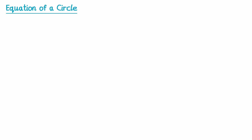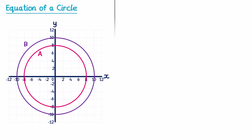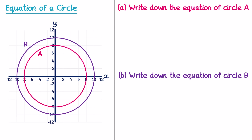Sometimes questions will test the reverse process — they could give you a circle that's already been drawn and ask you about its equation. In this example, we need to write down the equation of circle A and circle B. Looking at circle A, I can see it crosses all of the axes at 8 and negative 8, which means its radius must be 8. So the equation is x² + y² = 8², and 8² is 64, so it's x² + y² = 64.